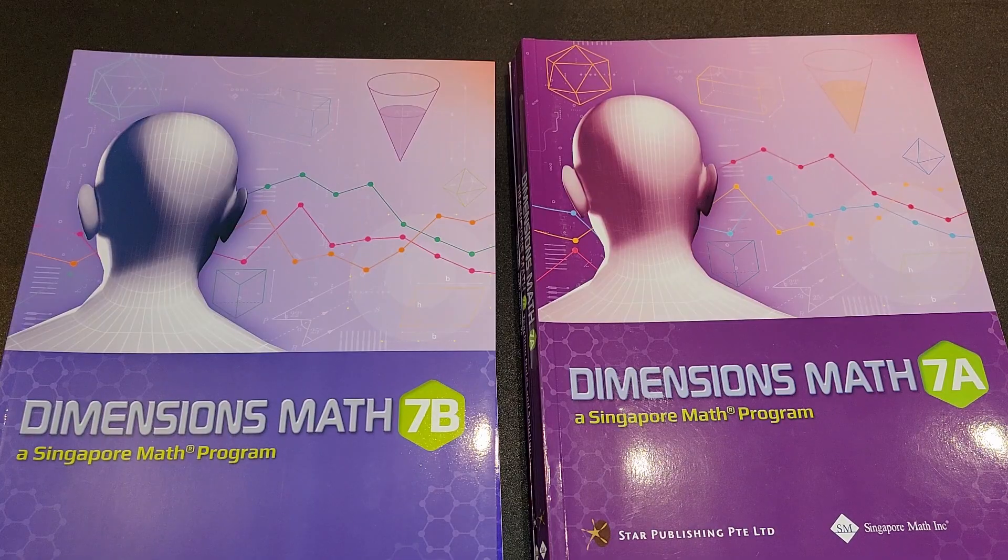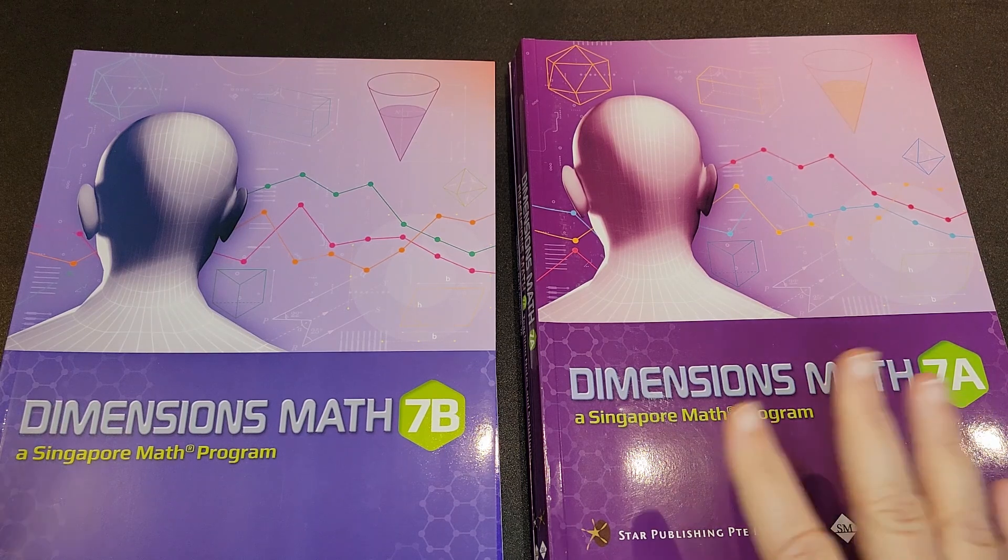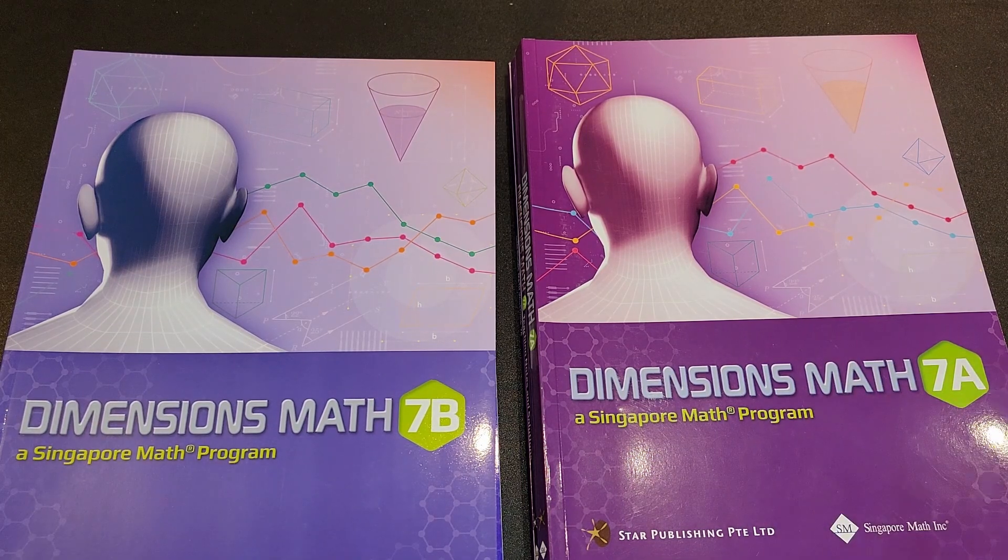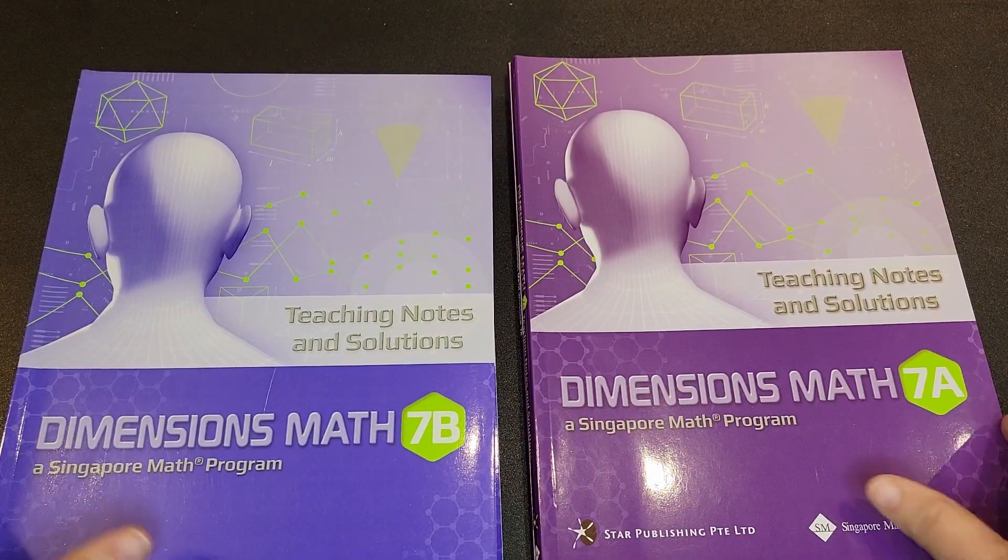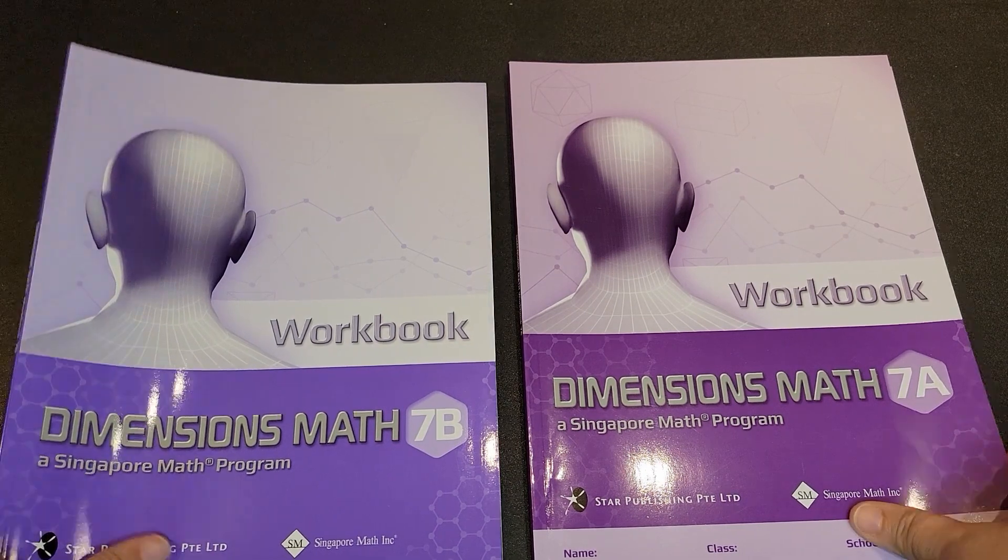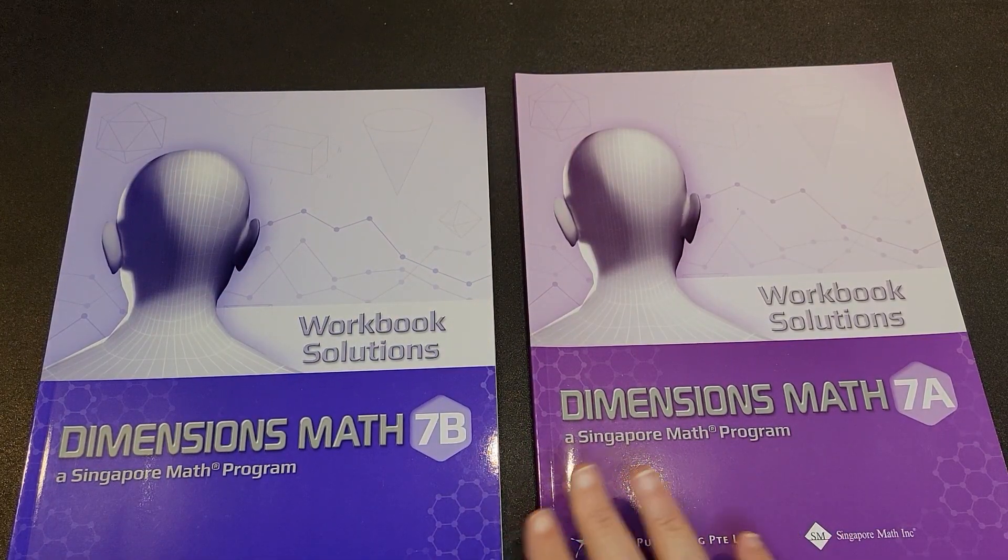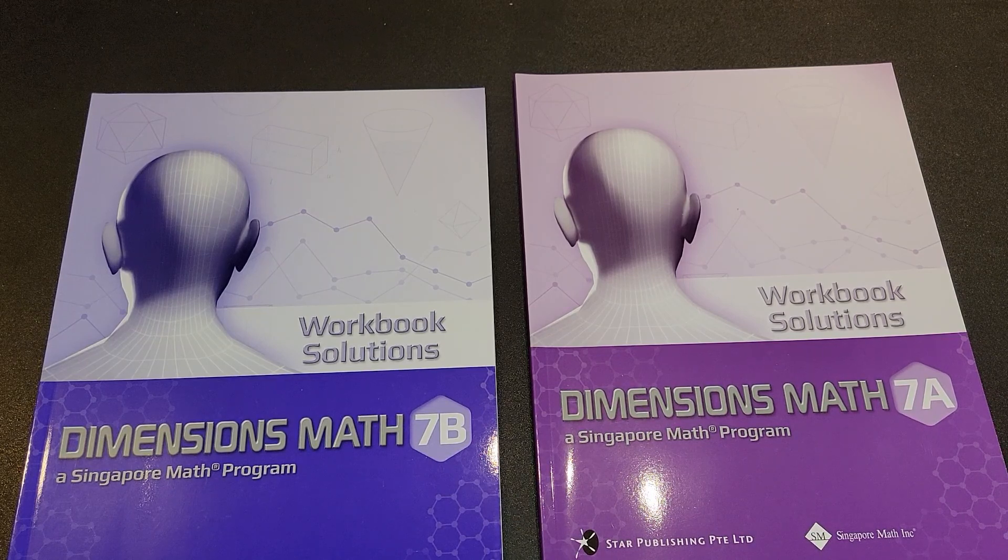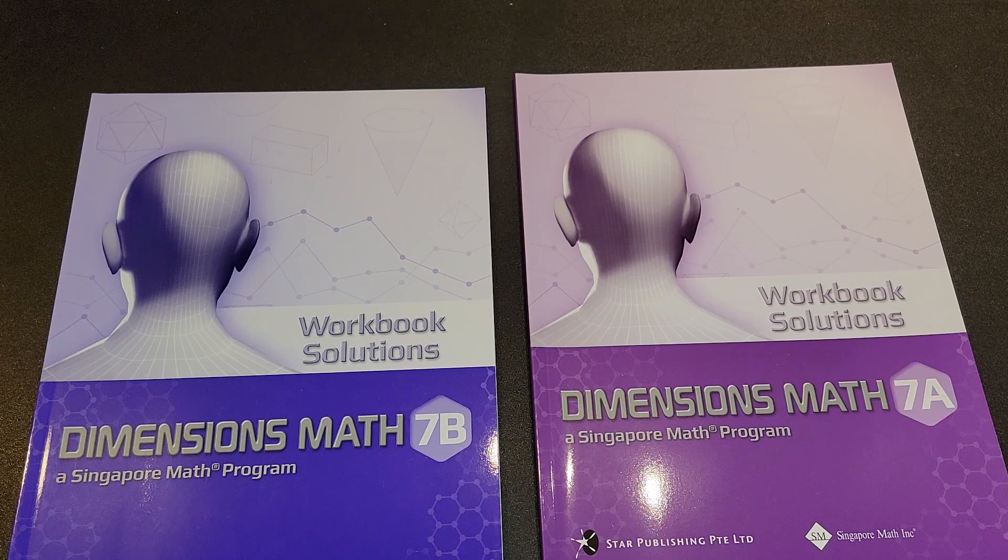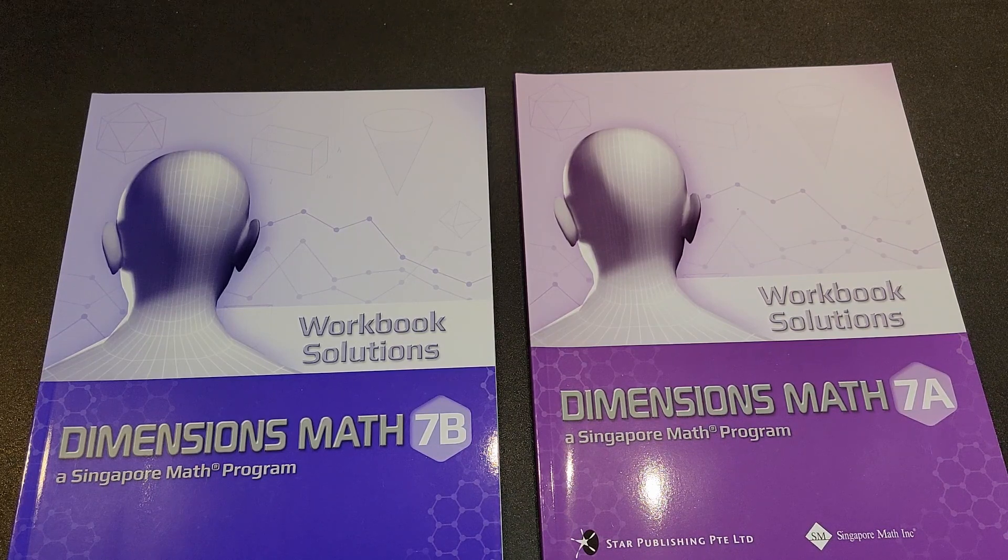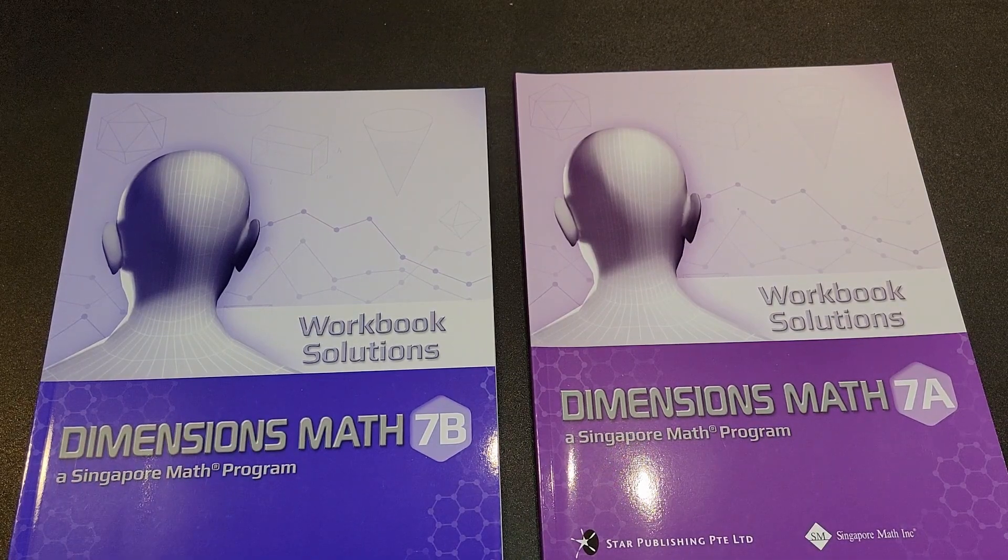Singapore Dimensions Math 7 is set up the same way that you would have seen in earlier Dimensions programs in that you have an A and a B. So for each semester, you have the student textbook, the teaching notes and solutions, the workbook, and then the workbook solutions. This is a little bit different right here than what you would have seen in, say, six, because in Dimensions 6 you had one solutions manual for the entire year. This year you will have two.